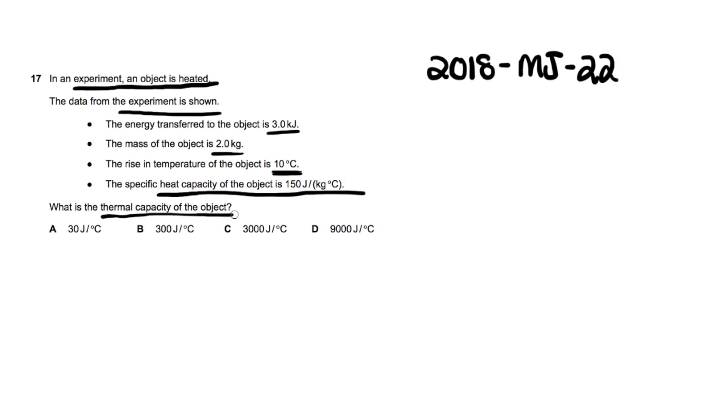Well they've actually thrown in a bit of extra information here and you'll see exactly why in a second. So the specific heat capacity of an object is the measure of how much energy it takes to make an object of unit mass increase its temperature by one degree Celsius.